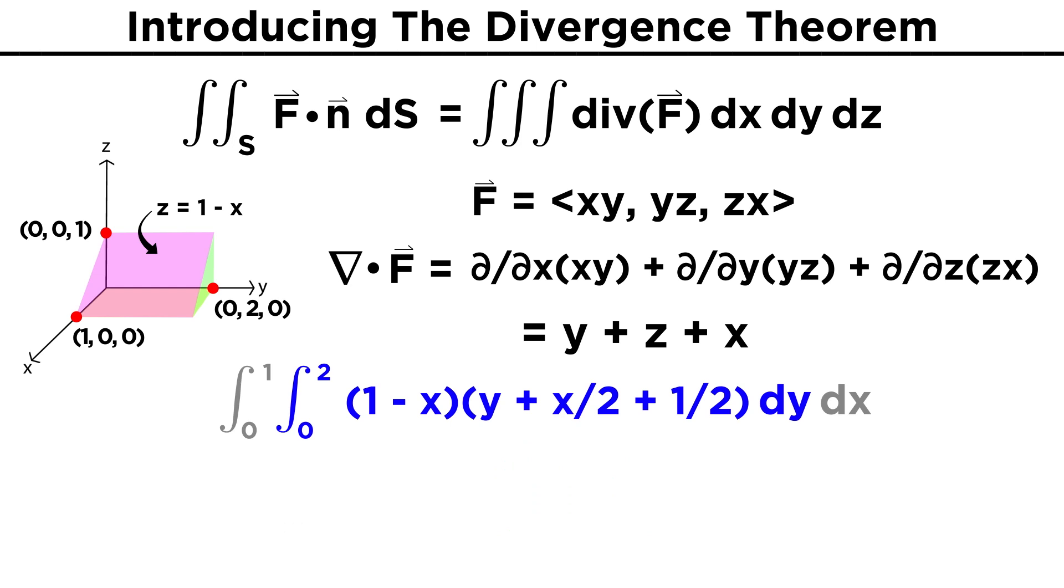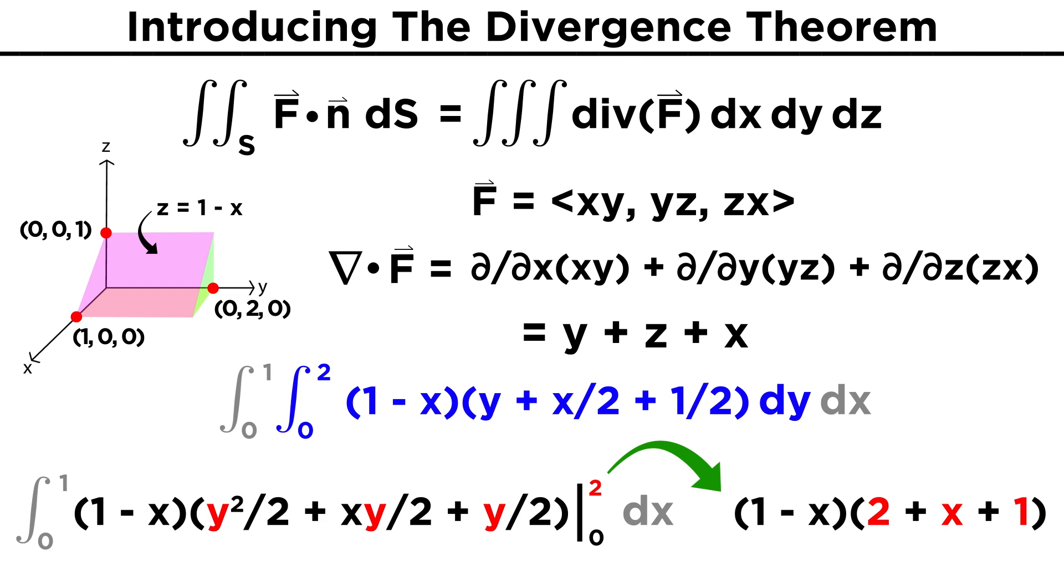Next, we must integrate with respect to y, which gives us one minus x, y squared over two plus xy over two plus y over two, where y is evaluated from zero to two. Evaluating this, we get one minus x times two plus x plus one, or just one minus x times x plus three.